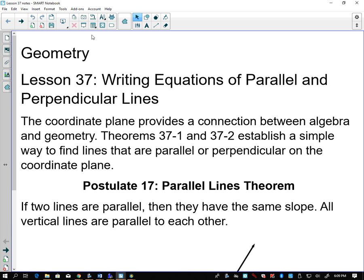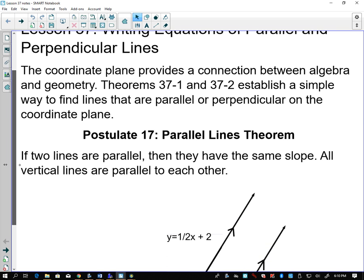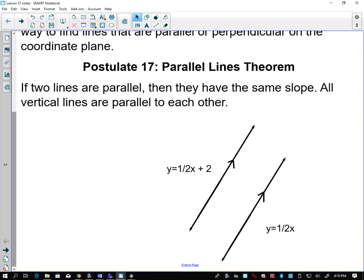So we're talking about writing equations of parallel and perpendicular lines. Parallel lines, by their very nature, have the same slope, but when drawn on a coordinate plane, they're going to have a different y-intercept. Perpendicular lines, in short, have opposite reciprocal slopes. The coordinate plane provides a connection between algebra and geometry. We're going to be looking at theorem 37-1, theorem 37-2. Postulate 17: If two lines are parallel, then they have the same slope.